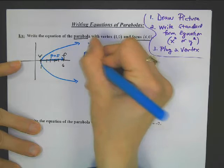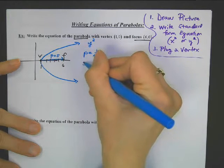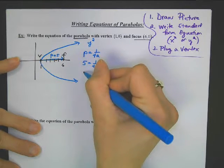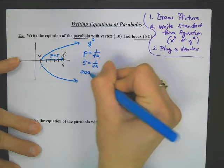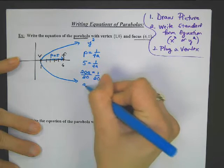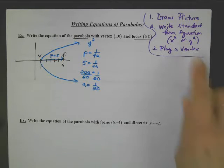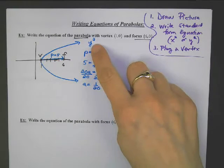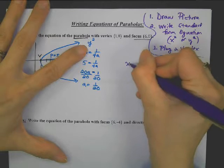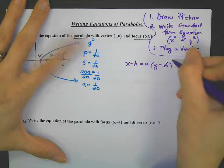Okay, p is 5. I know that the p formula is 1 over 4a. So we've got 1 over 4a. I will cross-multiply: 20a equals 1, and so a is 1/20. I've got my picture and some information. Now I have to get that standard form equation for y squared. The equation of a parabola opening left and right has the y squared.